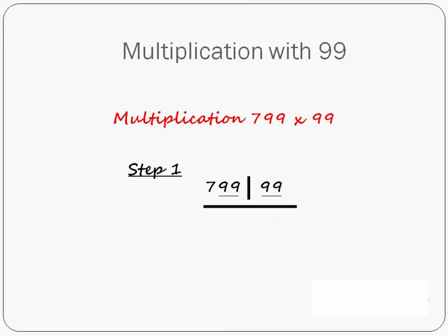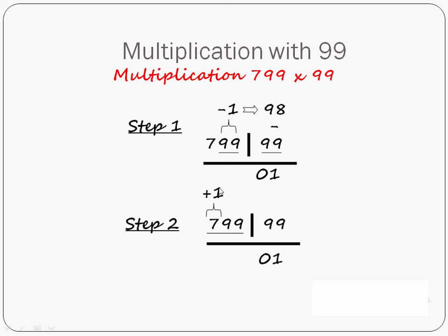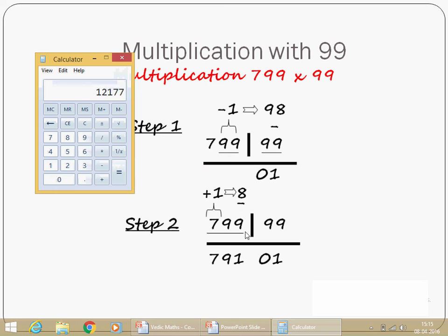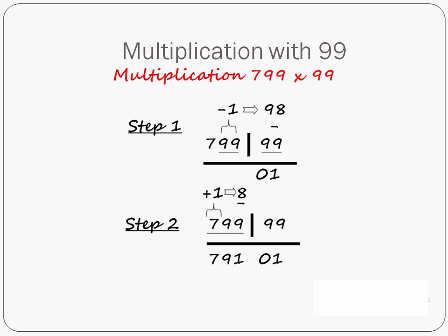Let's try 799 × 99. First, count the digits of 99: 2 digits. Take the last 2 digits of 799, that's 99. Subtract 1 to get 98. Now subtract 98 from 99: 9−9=0, 9−8=1 — last part is 01. For the first part, take the remaining digit 7, add 1 to get 8. Then subtract 8 from 799: 799−8=791. So the answer is 791 01, that is 79,101.